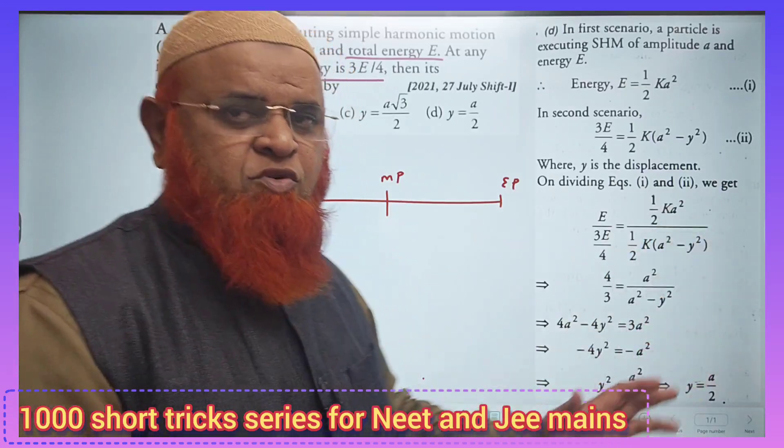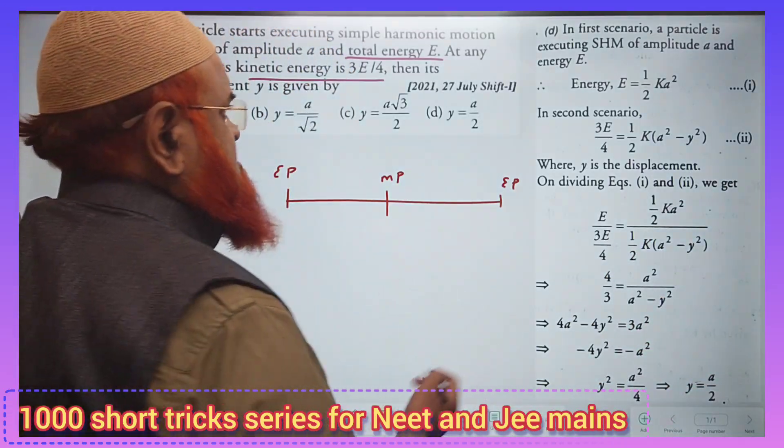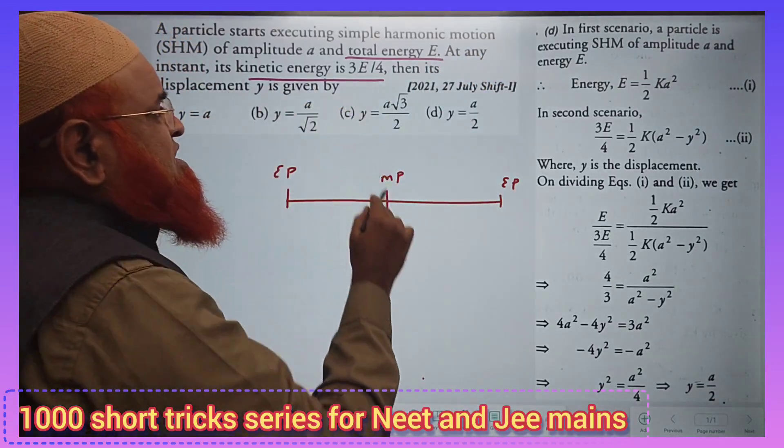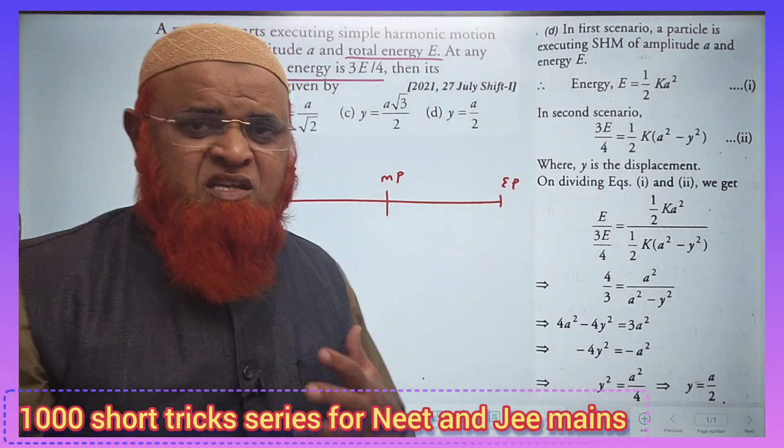You can just see the textbook. What is the question actually asking and try to understand this question. The total energy is E and kinetic energy is 3 by 4. What does it mean?